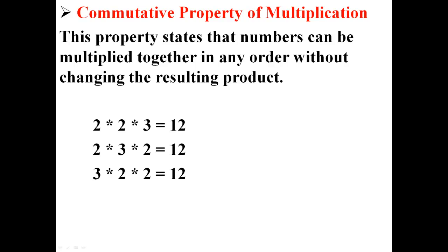So for example, 2 times 3 times 2 is also 12, and 3 times 2 times 2 is also 12. This is true according to the commutative property of multiplication.